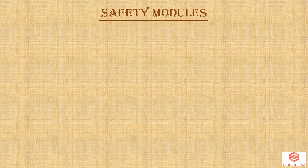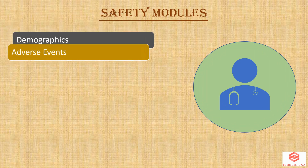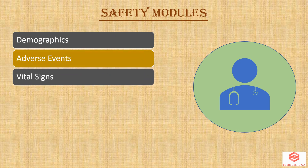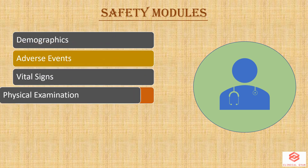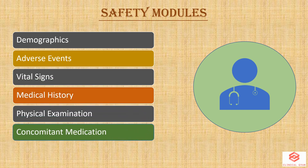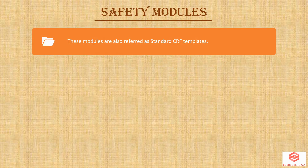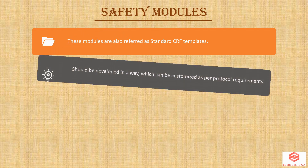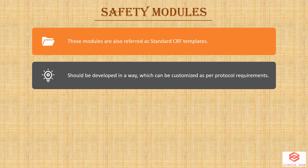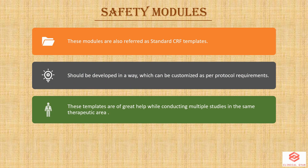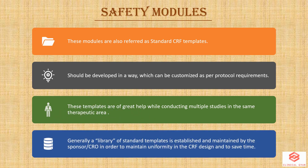The safety module includes safety CRFs such as demographics, adverse events, vital signs, medical history, physical examination, concomitant medication, and patient disposition. These modules are referred to as standard CRF templates and should be developed in a way that can be customized accordingly. These templates are of great help while conducting multiple studies in the same therapeutic area. Generally, a library of standard templates is established and maintained by the sponsor or CRO in order to maintain uniformity in CRF design and to save time.